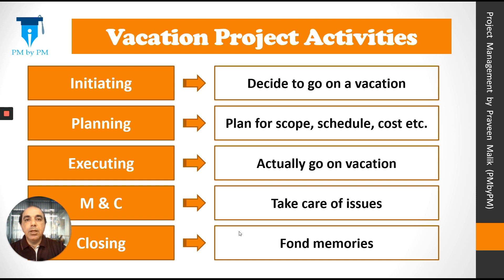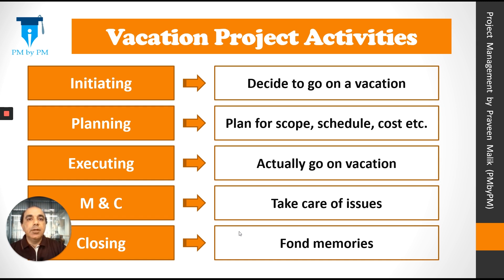Planning might include planning for time, cost, scope, etc. Executing might include actually going on the vacation, doing some sightseeing, etc. Monitoring and controlling activities would include taking care of issues as they come. Finally, closing activities would include coming back with fond memories and printing some albums. So you saw five different types of activities, clubbed into five different process groups.